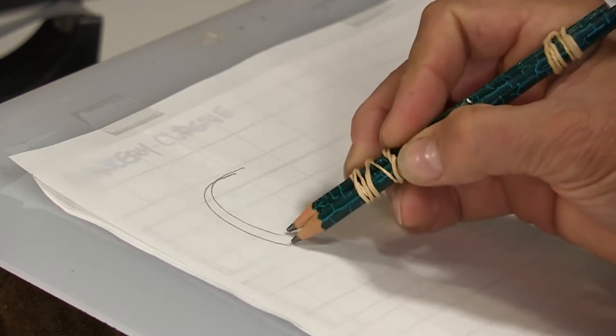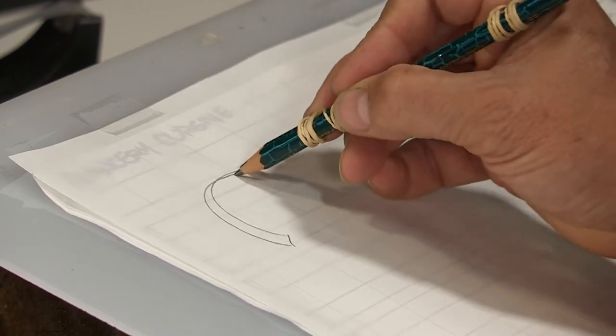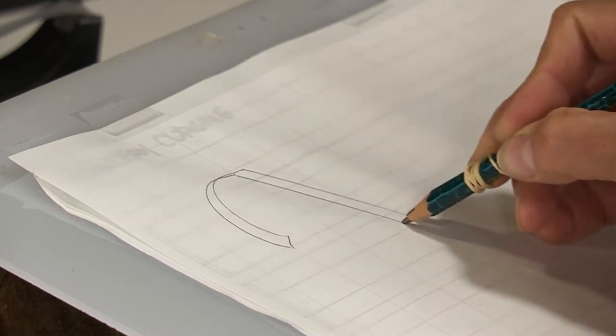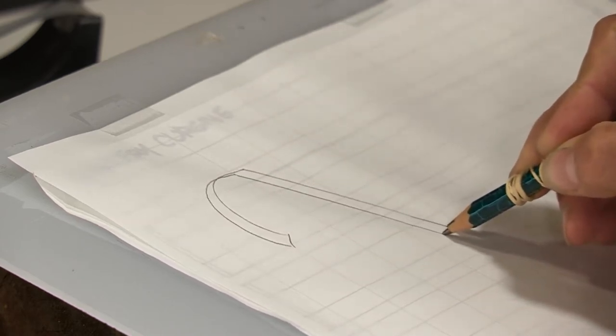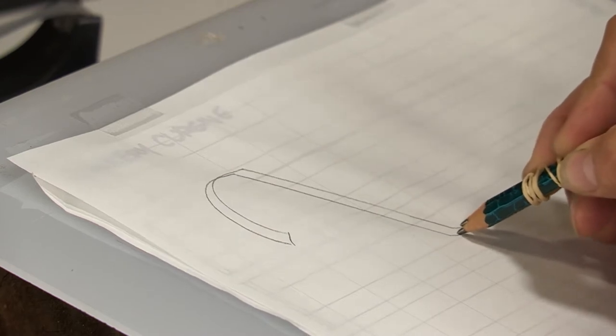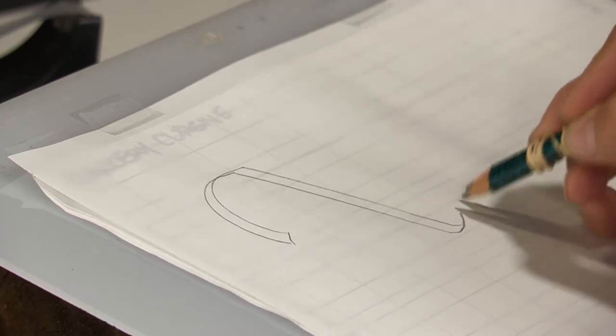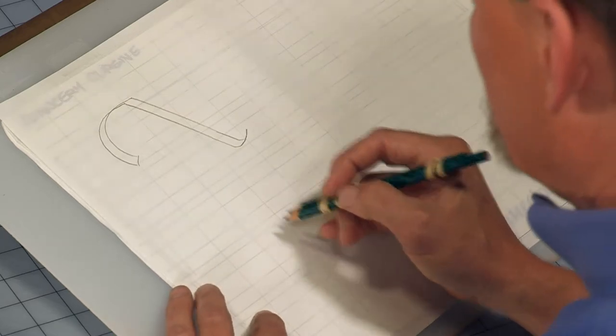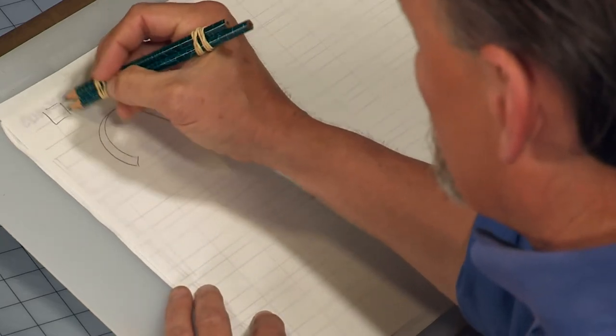Then the next stroke is a straight down, holding my pencil or my pen at the traditional angle, little hook at the end.